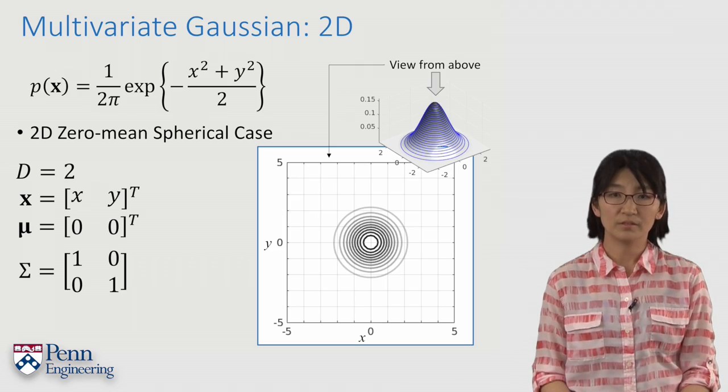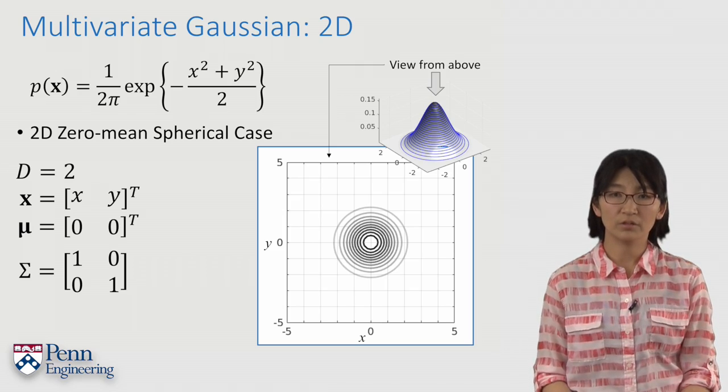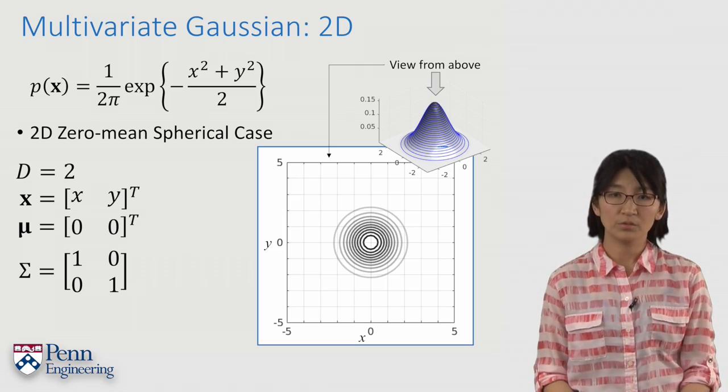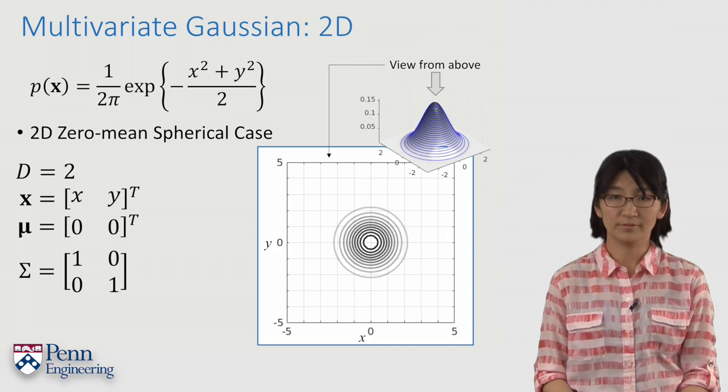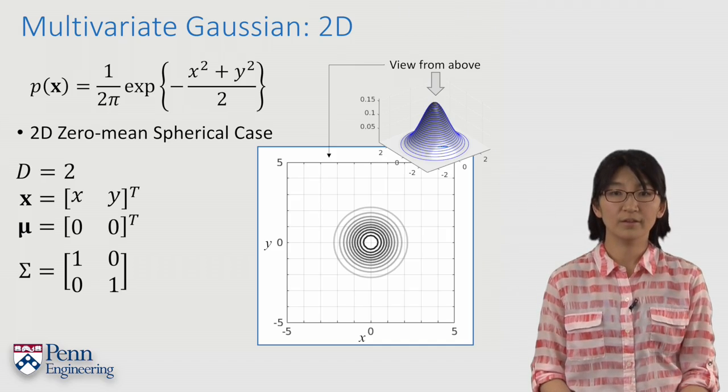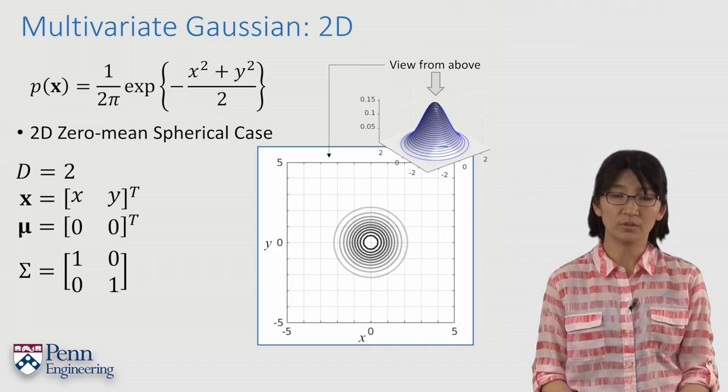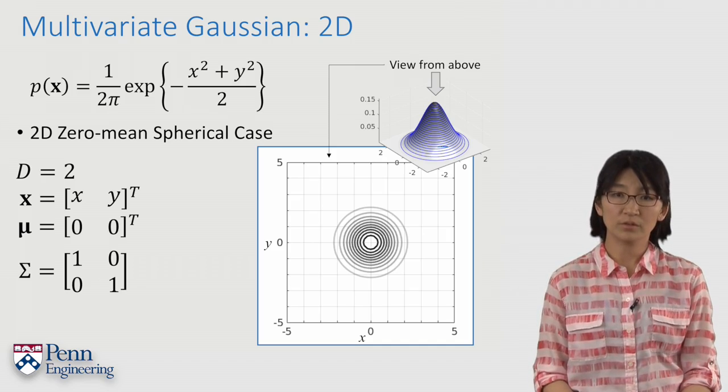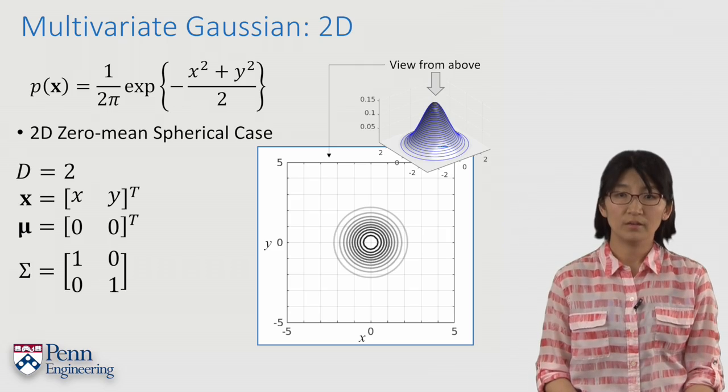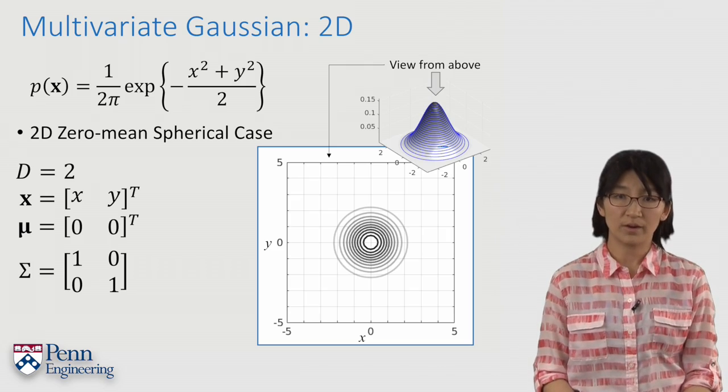In the spherical case where the covariance is a diagonal matrix with equal values on the diagonal, the contours appear as circles. The innermost circle is where the peak is, and the outer circles represent less probable regions of the graph.